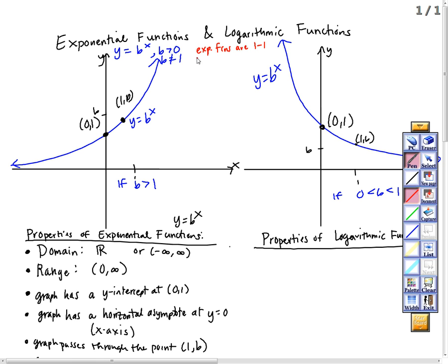Since exponential functions are one-to-one, they have inverses. Do you remember how to find an inverse? We have the function y equal b to the x, then we switch x and y. If we do that, we get x equal b to the y.